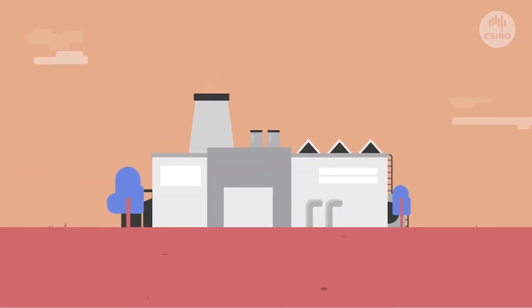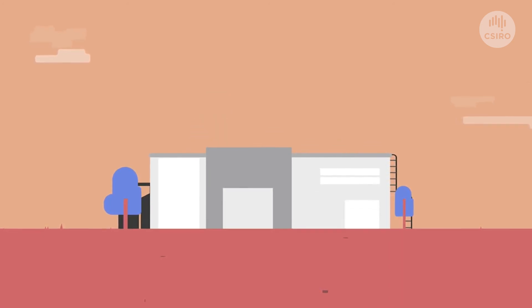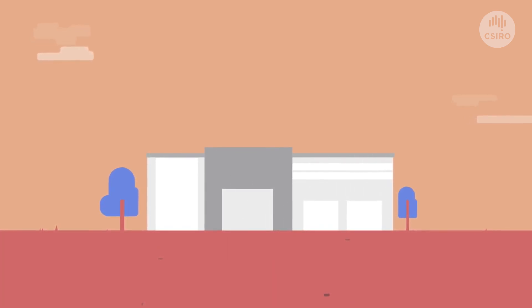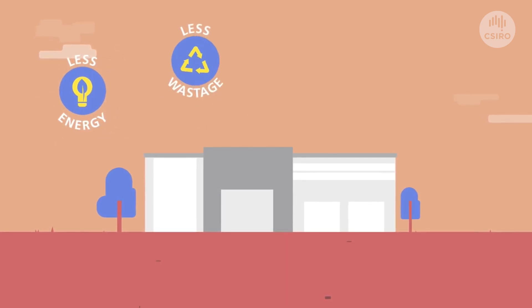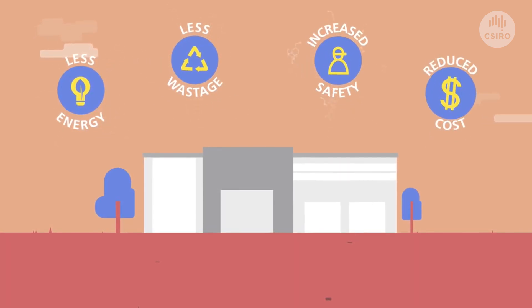Flow chemistry reduces processing time from hours to minutes, which in turn reduces required plant space. For industrial chemical manufacturers, this translates to lower energy usage, less wastage, increased safety, and reduced costs.